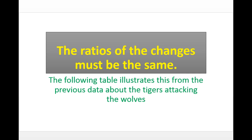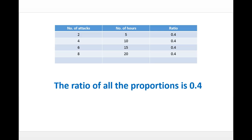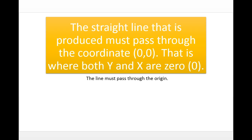The ratios of the changes must be the same. Looking at the table for the tiger example: the ratio of 2 to 5 is 0.4; 4 to 10 is 0.4; 6 to 15 is 0.4; and 8 to 20 is also 0.4. That is exactly what is meant when we talk about the ratios or rates being the same.